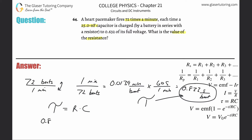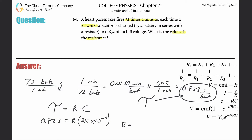So 0.833 equals R times C, where capacitance is 25 nanofarads. Converting to farads: 25 times 10 to the minus 9 farads. Dividing both sides by C gives us R equals 0.8333 divided by 25 times 10 to the minus 9.